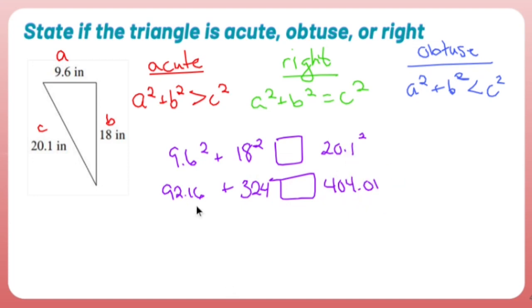And that is going to be 404.01 for 20.1 squared. If I add these two together, I get 415.16, 416.16.